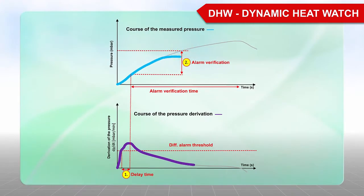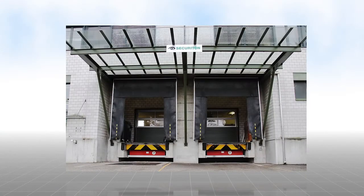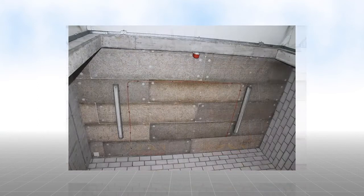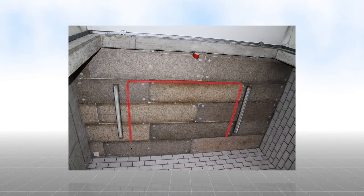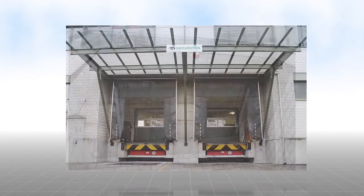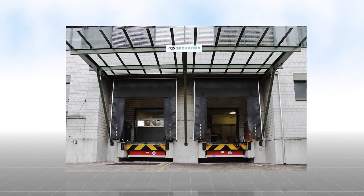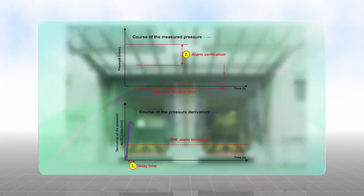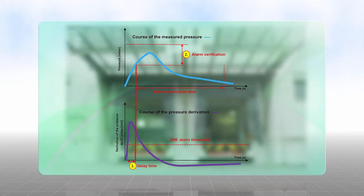If the ALARM VERIFICATION time expires without the expected pressure increase, then this is only a disturbance. This can be explained well using a loading platform as an example. The sensing tube is installed under the roof on the outside of the loading ramp. If a large door is opened in the winter, a rush of warm air hits the sensing tube and creates a rapid increase in pressure. Because the rush of air quickly disappears, the measured pressure decreases so that the alarm verification time expires without incident. No fire alarm is triggered.